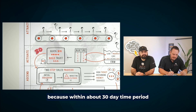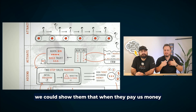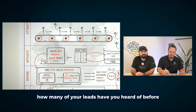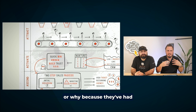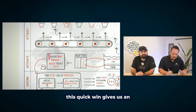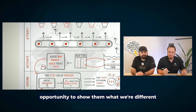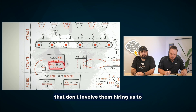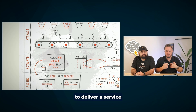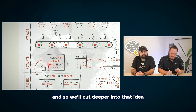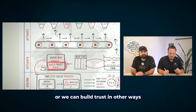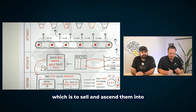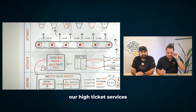Many times that quick win service is helping them get more five-star reviews on sites like Google, Facebook, Better Business Bureau, and Yelp, because within about a 30-day period we can show them that when they pay us money, they get a result. How many of your leads have said something like, 'I don't like digital marketing agencies,' because they've hired other people and been burned? This quick win gives us an opportunity to show them we're different. We could also build trust in other ways that don't involve delivering a service, setting them up to be sold and ascended into our high-ticket services.